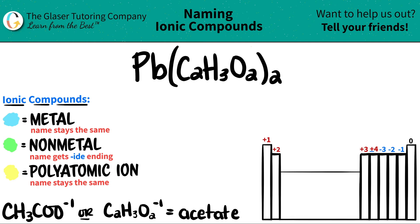Today, we are going to be naming the ionic compound Pb(C2H3O2)2. When you have three or more different elements for an ionic compound, in this case, we have four.